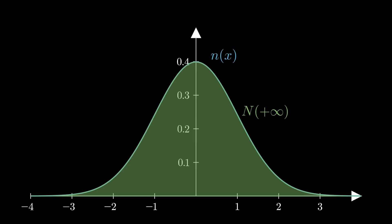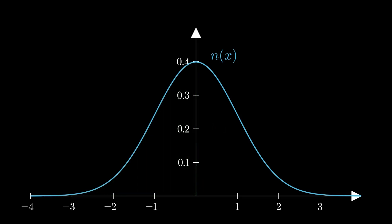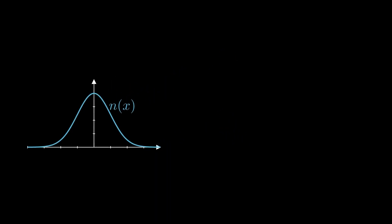N(0) equals 0.5, since the curve is symmetrical, with 50% of occurrences on either side of the mean. The Black-Scholes model uses probabilities from a normal distribution, even though we've assumed that stock prices follow a log-normal distribution. That might sound like a mismatch, but with a simple adjustment to the variable x, we can still use N(x) to calculate probabilities for a log-normal distribution.